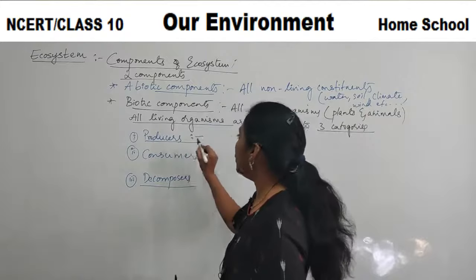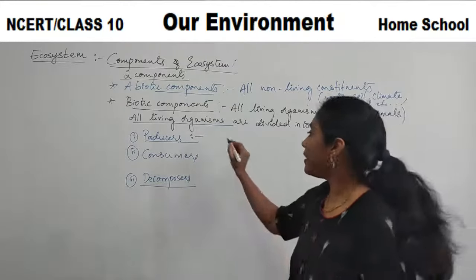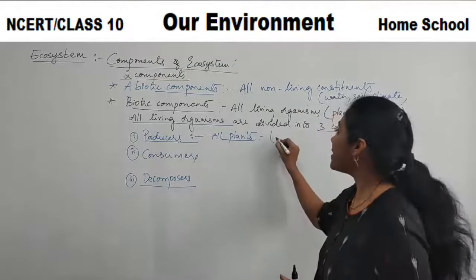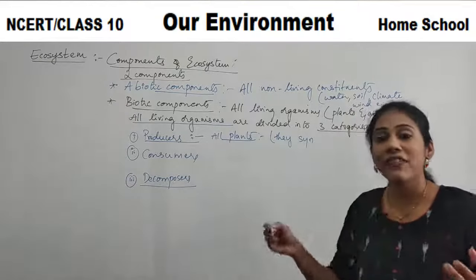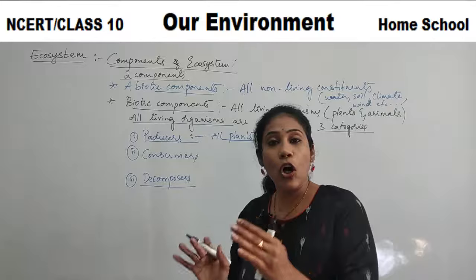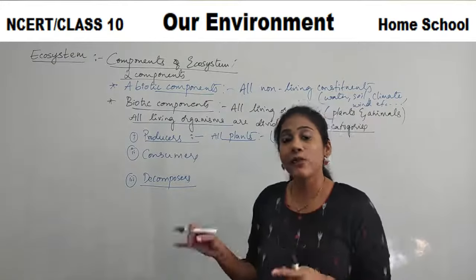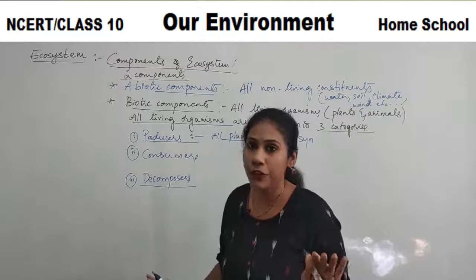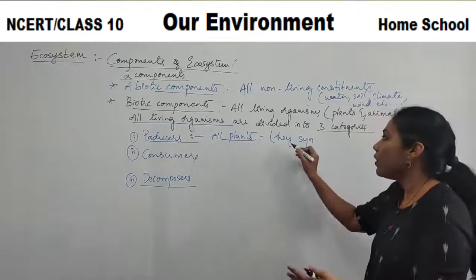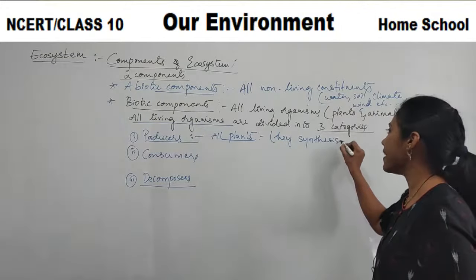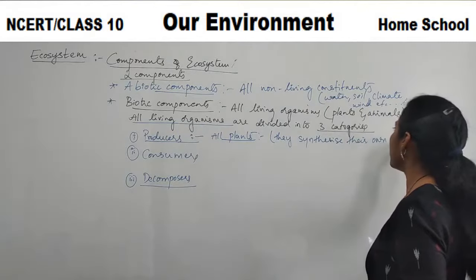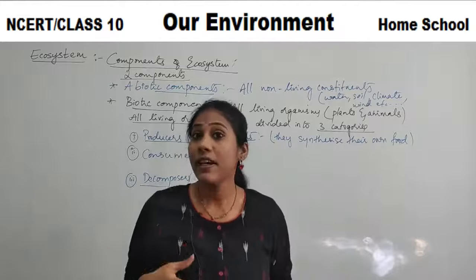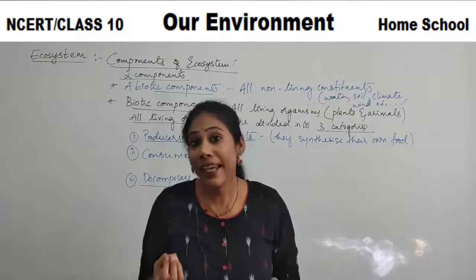Coming to producers — what do you mean by producers? All plants come under this category because they synthesize their own food. The living things which can synthesize their own food are called producers. So all plants are called producers here, because producers are the things which can prepare their own food.